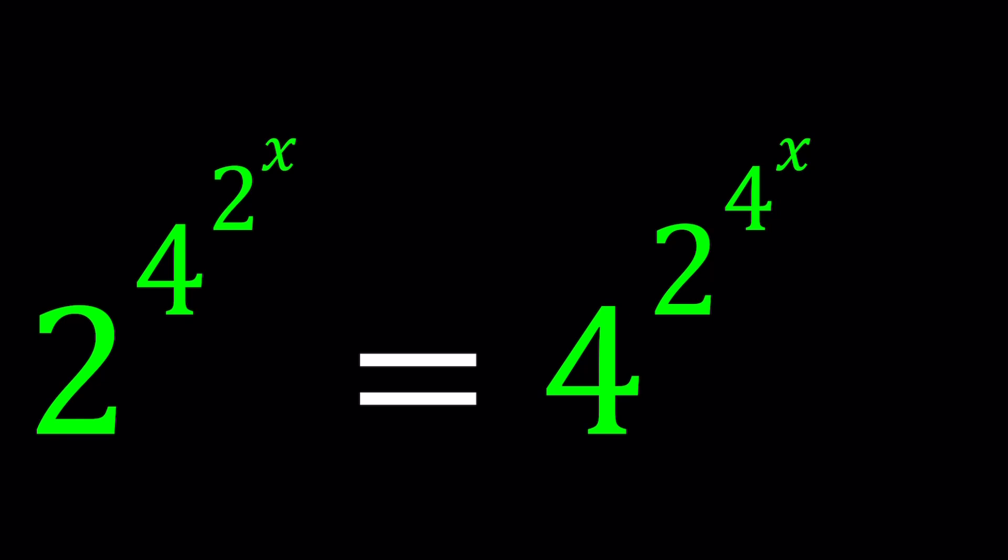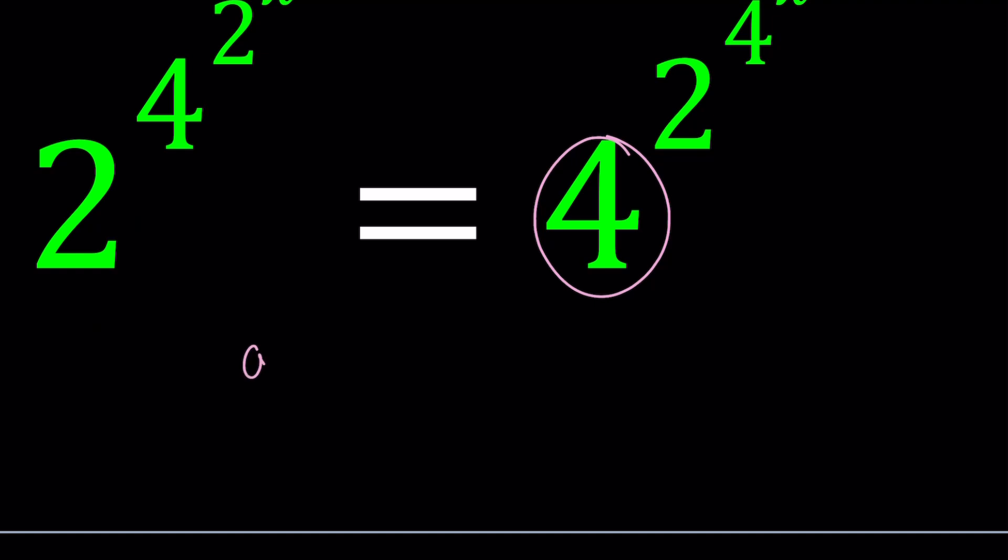So we have something like this. What should we do first? We have a 2 on the left-hand side as our base, the very base, and 4 on the right-hand side. So let's go ahead and write this 4 as 2 to the second power. And then, once we get the same base, we can work with the exponents. Because if you have something like a to the power m equals a to the power n, then we can safely say that m equals n, as long as a does not equal 1, negative 1, or 0.